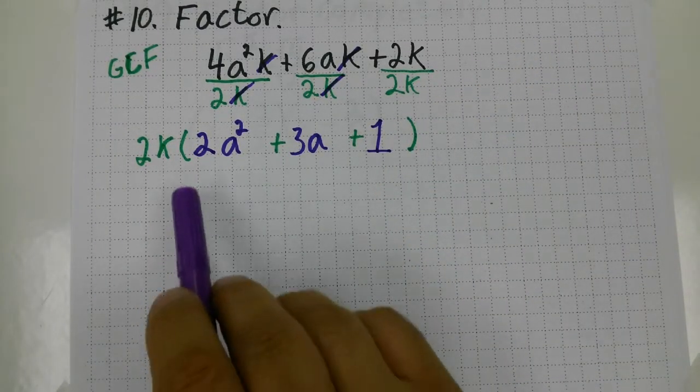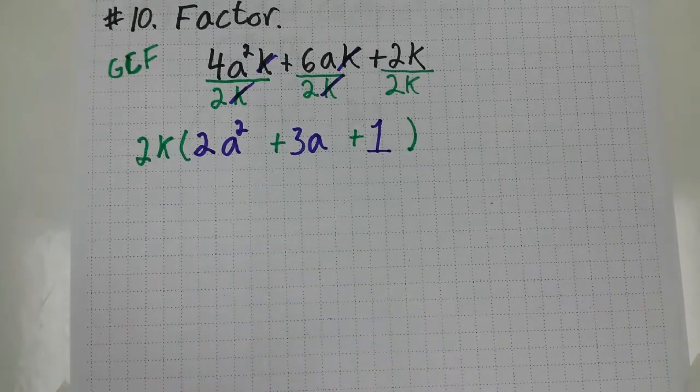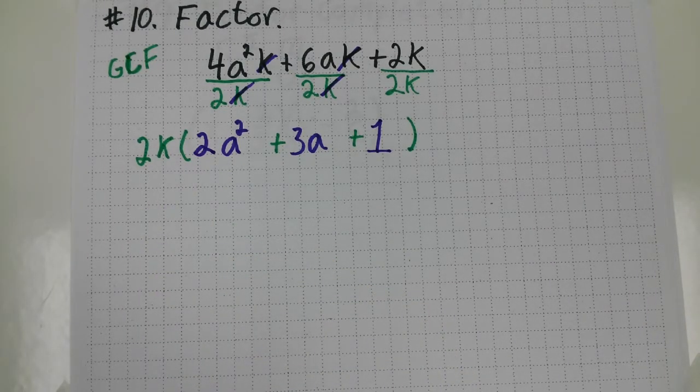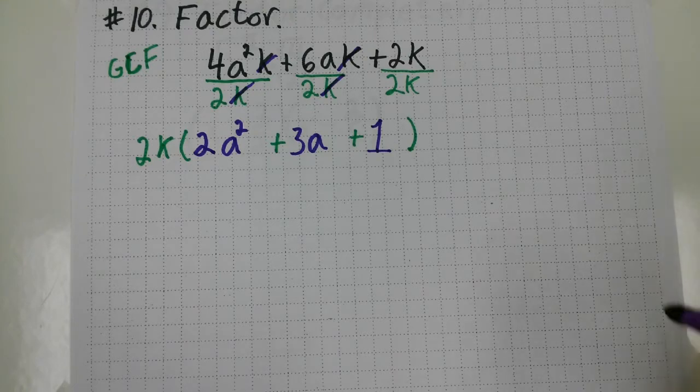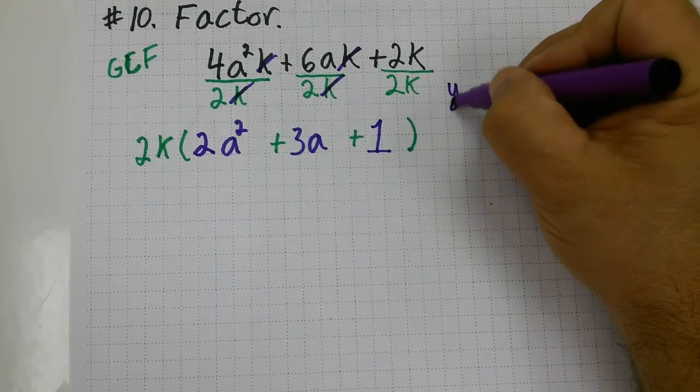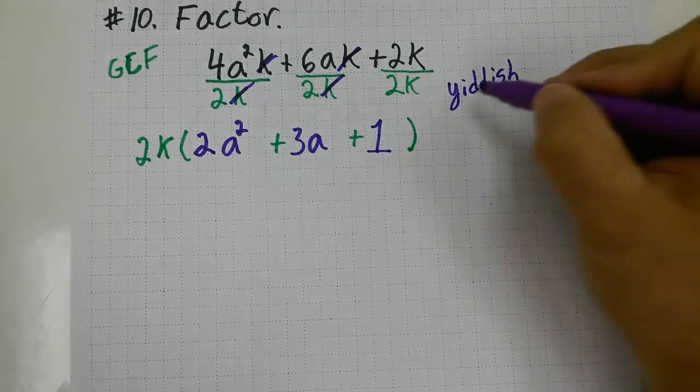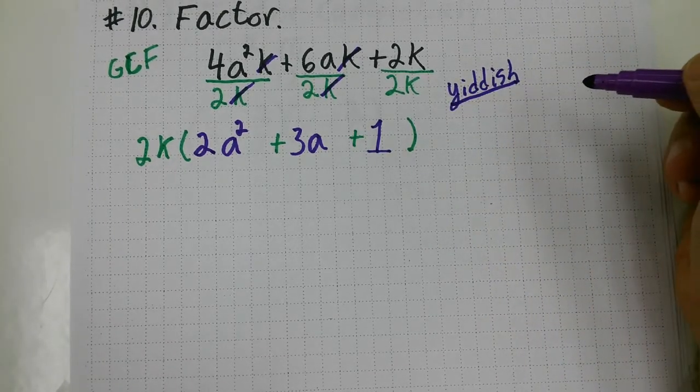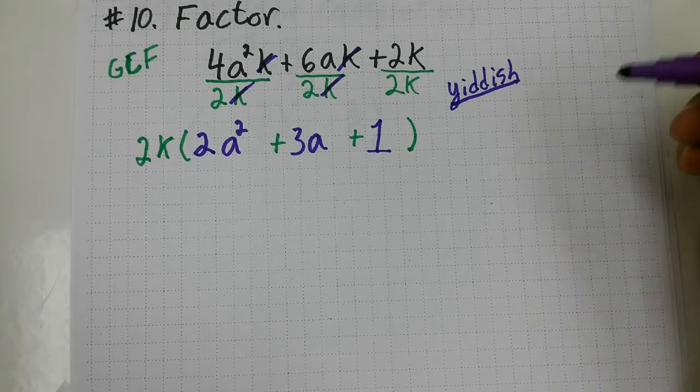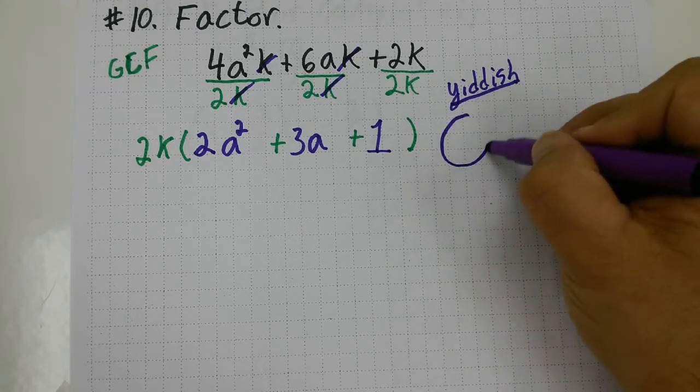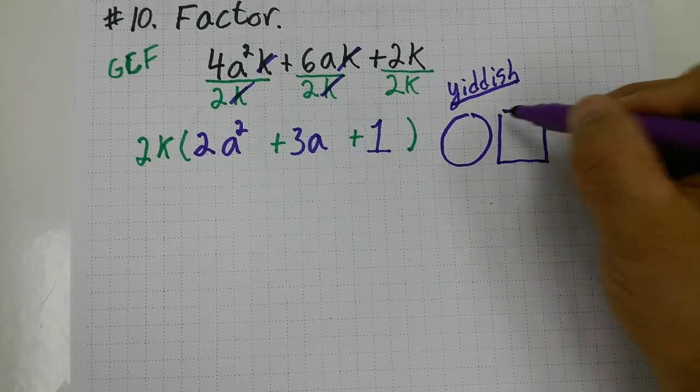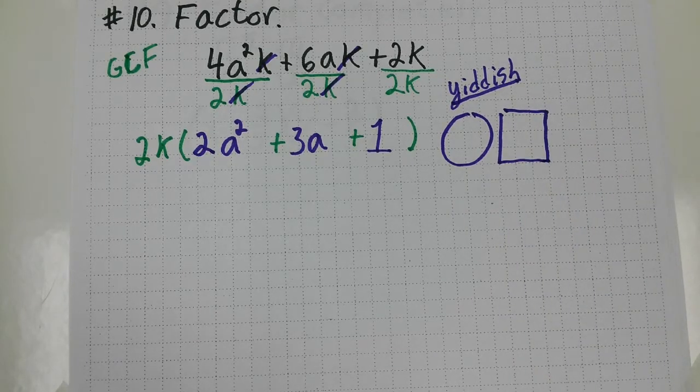I'm a little upset because I still have a leading coefficient, and they're not easy to factor. I'm going to use a method a friend of mine told me, and he calls it the Yiddish method. I used to have a method called the British method, but he came up with a more compact method. So, what I'm going to do is draw a circle and a box.